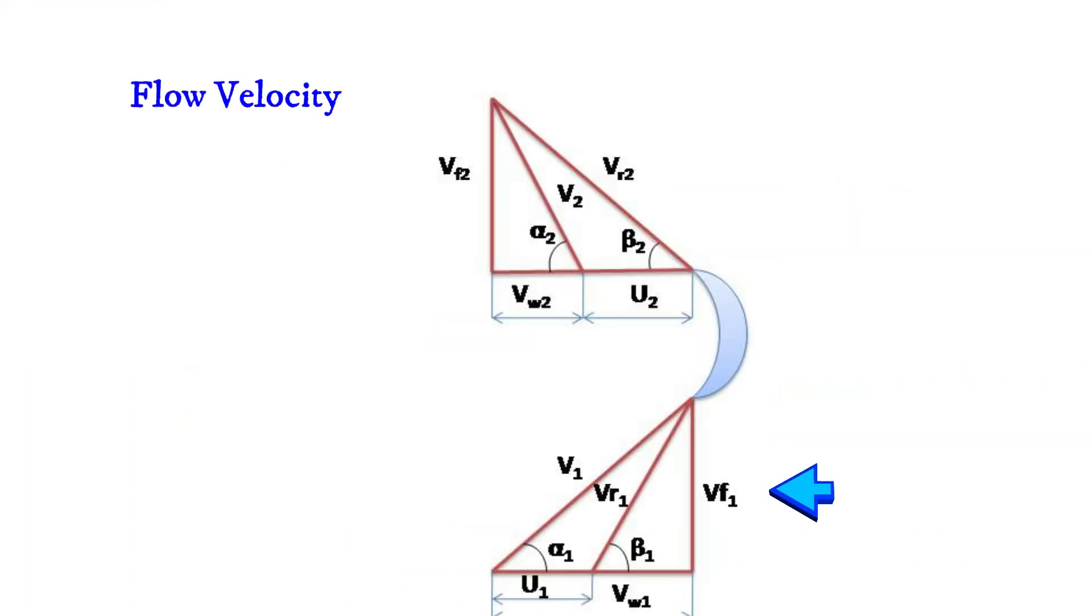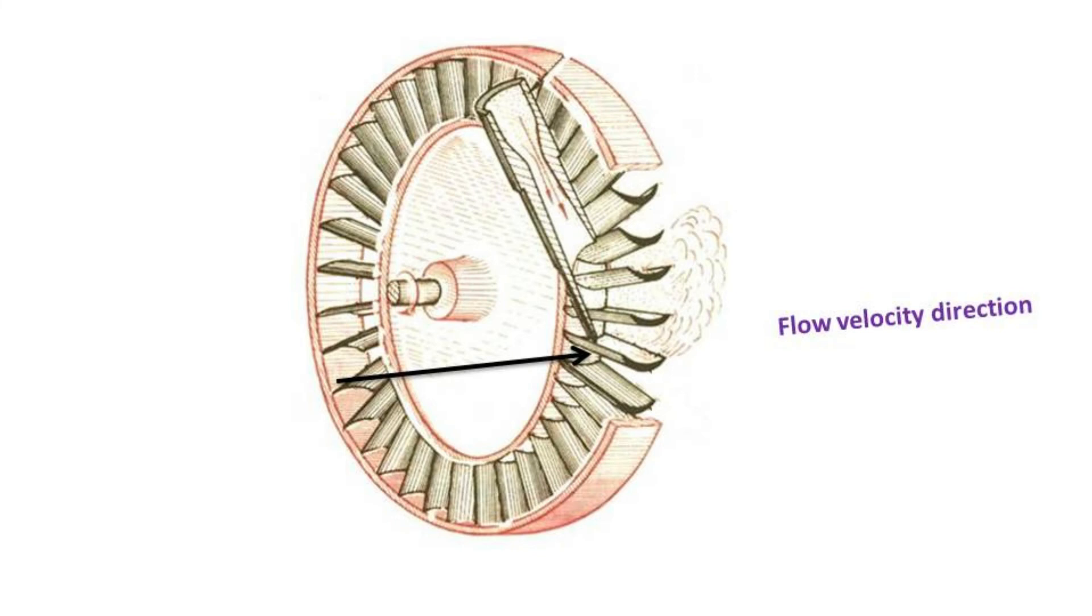Flow velocity vf1 is the vertical component of initial velocity at the inlet and it does no work on the blade because it is perpendicular to the direction of blade movement.